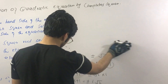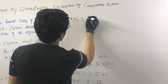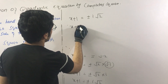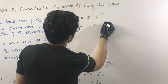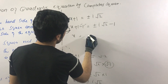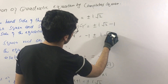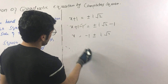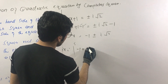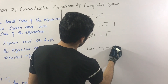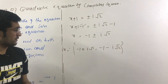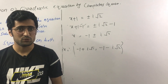So x plus 1 equals plus or minus iota times root 2. Therefore x equals minus 1 plus or minus iota root 2. The two values of x are: x equals minus 1 plus iota root 2, and x equals minus 1 minus iota root 2. These are the roots of the quadratic equation. Thank you for watching.